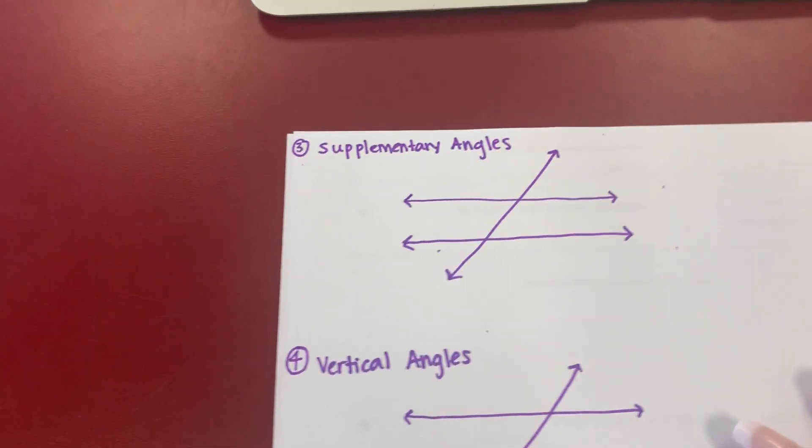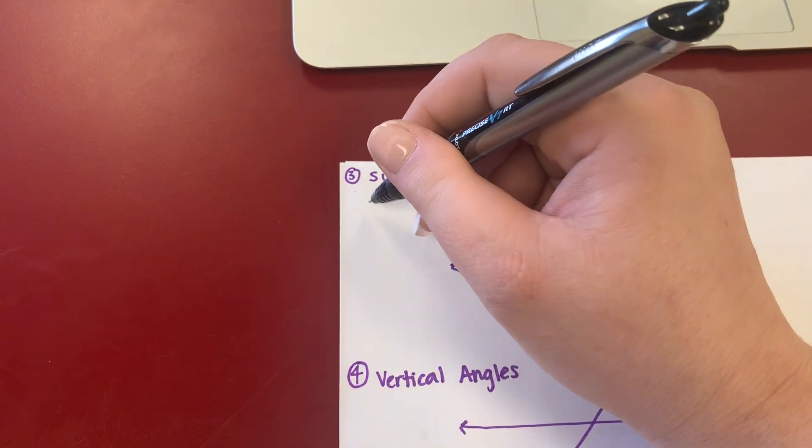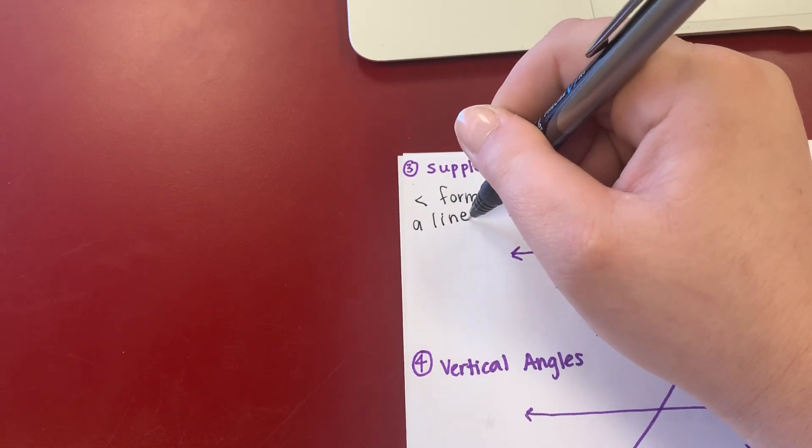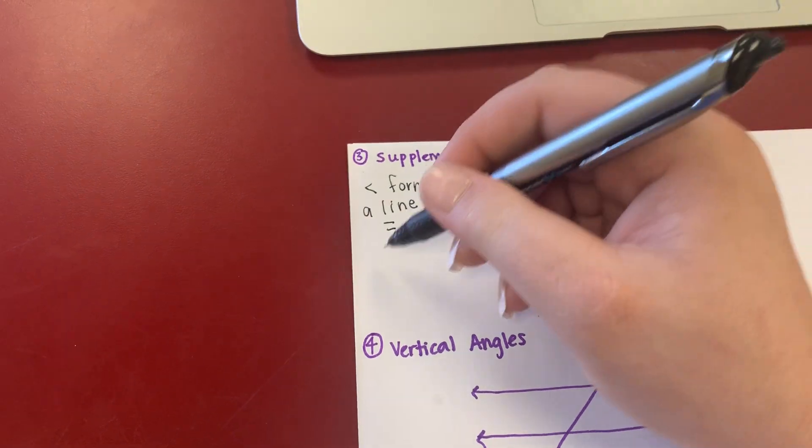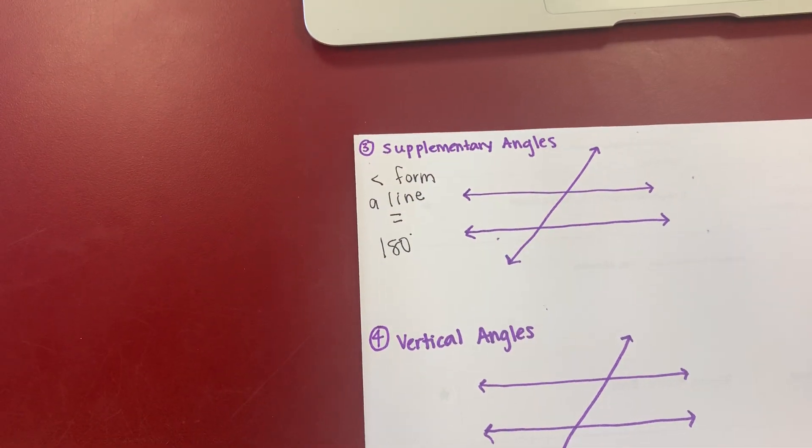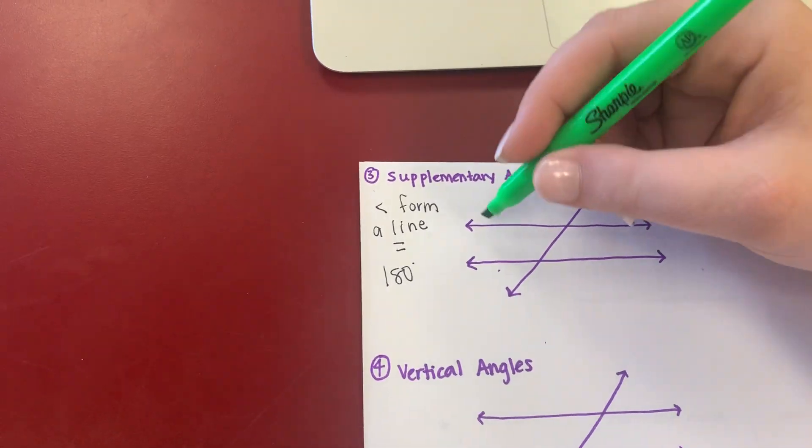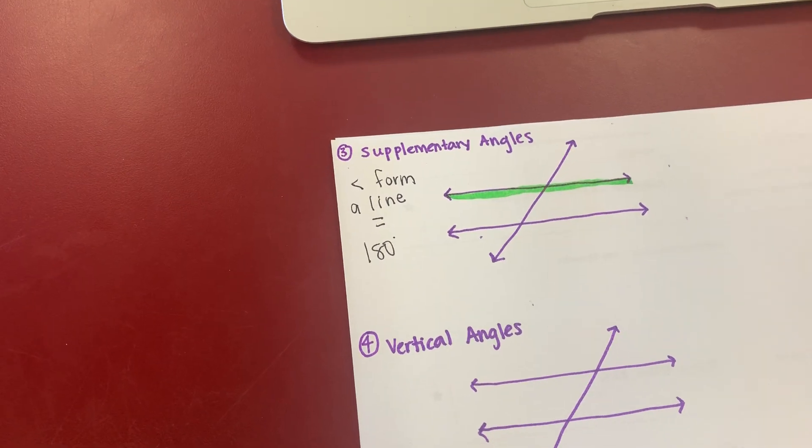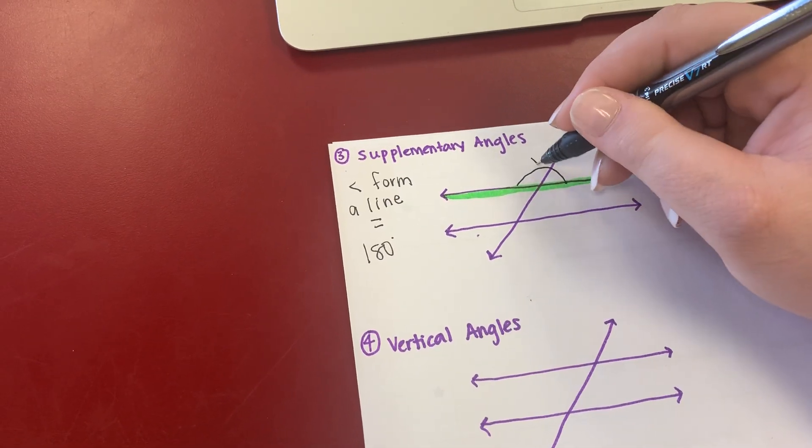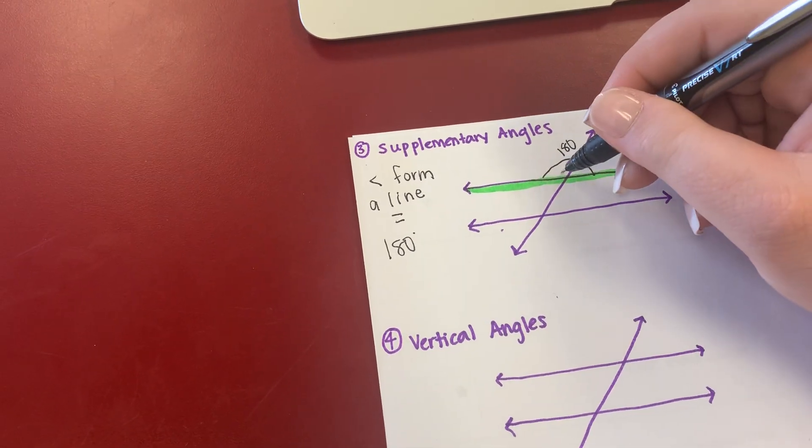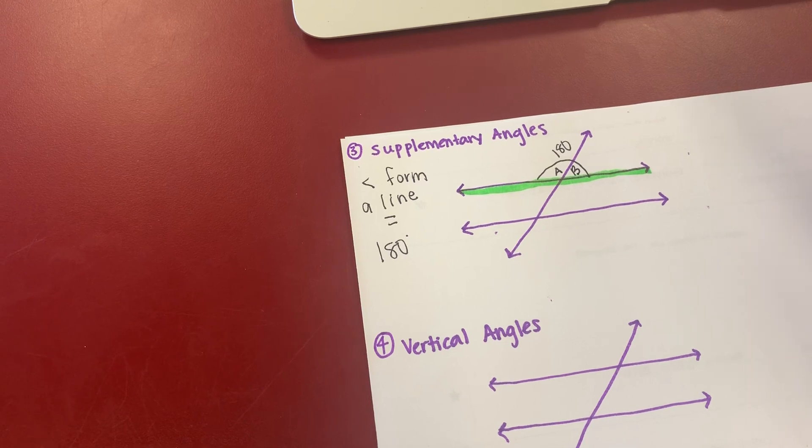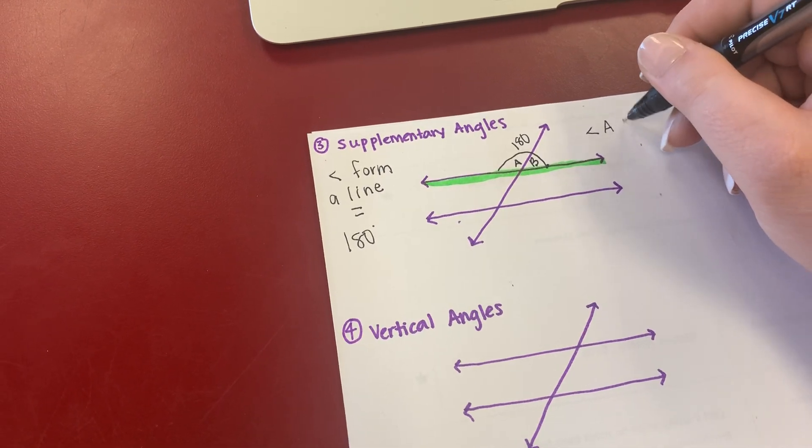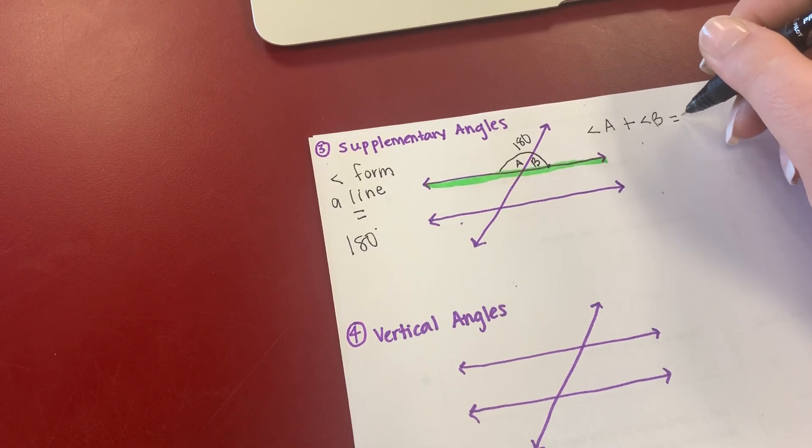Next, we have supplementary. Supplementary we learned last year. It's angles that form a line and they equal how many degrees is a straight line? 180 degrees. So now if I drew my straight line, this is going to be 180. So that means that angle A and angle B, whatever is here and whatever is here has to equal 180. So that means angle A plus angle B equals 180.